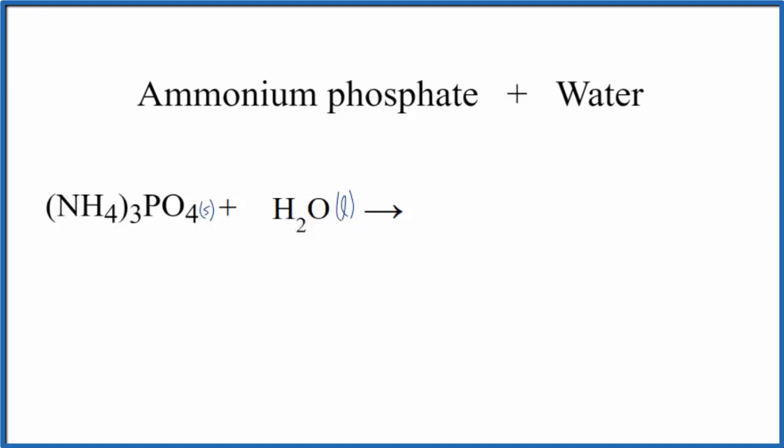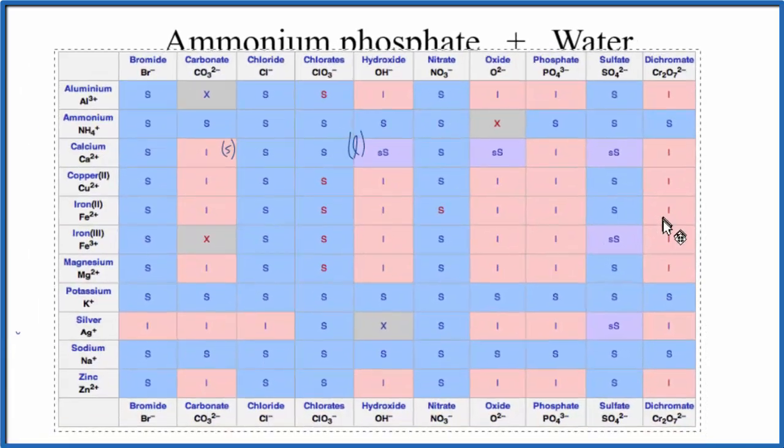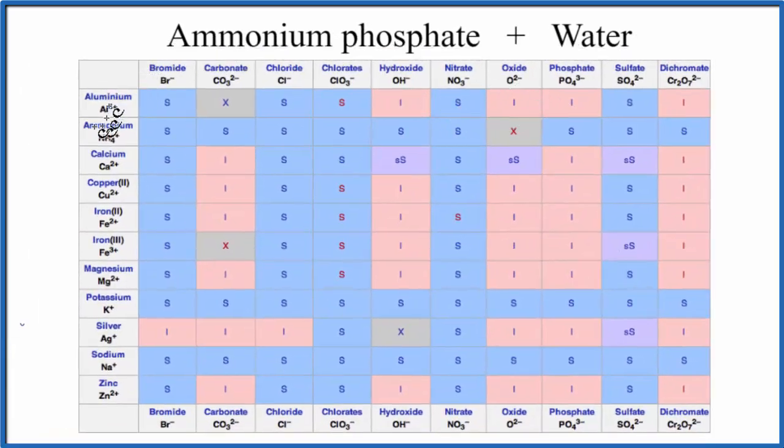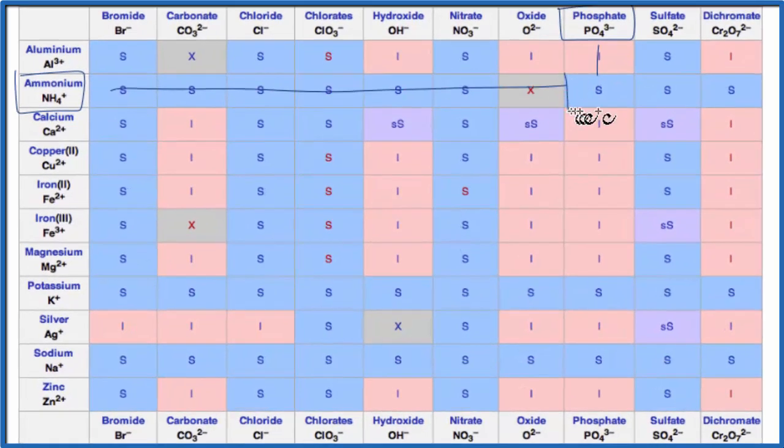We could also look at a solubility chart. So on our solubility chart, right here is the ammonium ion, NH4 plus. We're looking for phosphate, which is over here. So phosphate PO4 three minus, we go down, we go over, and that S on our solubility chart means soluble.